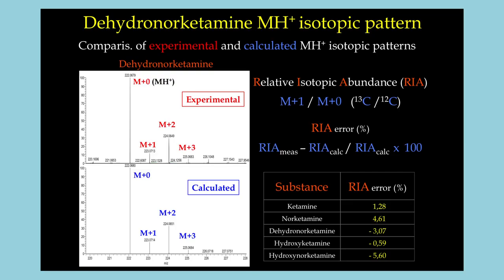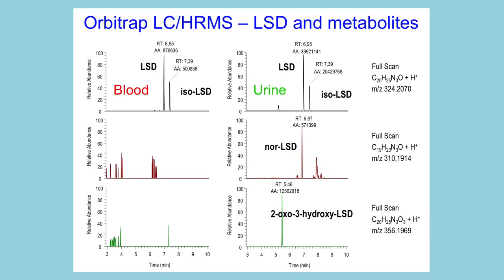Identification of metabolites in hair aids in the differentiation between administration and passive exposure to drugs. Due to its very high sensitivity, HRAM LC-MS is also used to detect very low levels of the drug LSD and its metabolites in blood and urine.